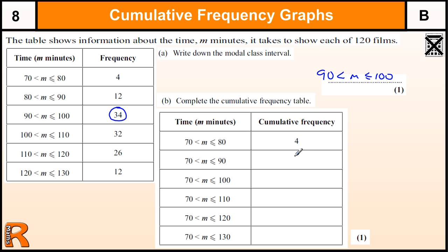So the first one is just the 4. Then we've got the 4 plus 12, which is 16. Then you take that value and add the next number, which is 34, to get 40, 50. And then we add the 32 to get 82. Then we add the 26 to get 108. And then we add the 12 to get 120. You know if you got it right, because this number at the end should add up to the total number of the frequency. So the 220 films. So that's one mark for that.